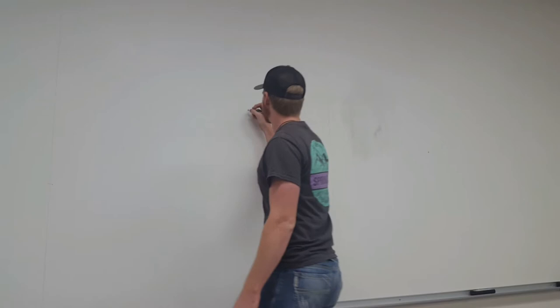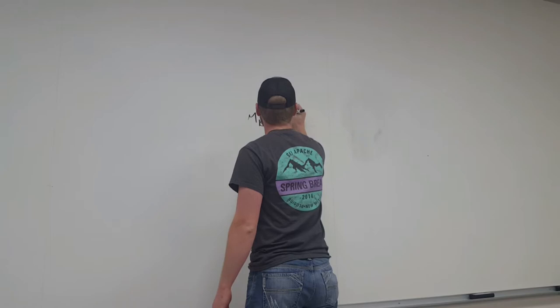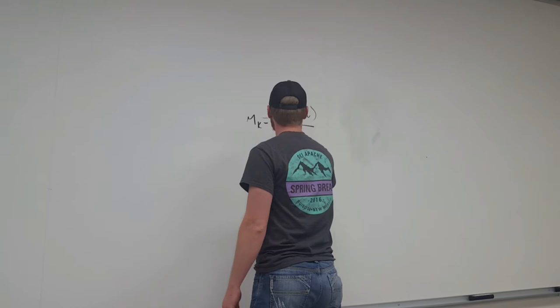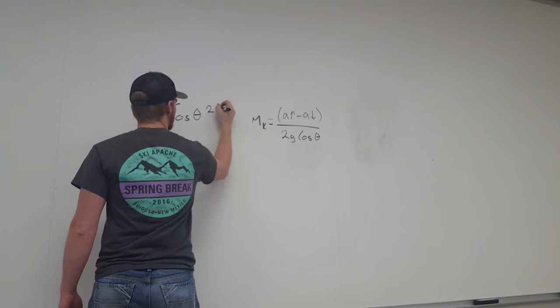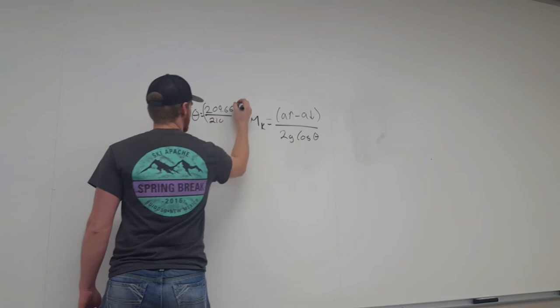Before Balto found the equation for the kinetic energy to be mu K equals the acceleration going up, minus the acceleration downward, all over 2 g cosine theta. And we found cosine theta to be 209.66 all over 210.